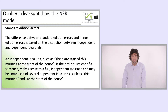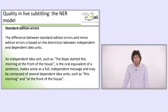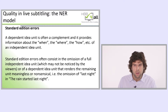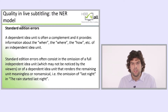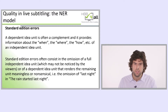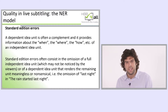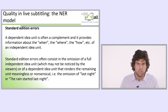An independent idea unit, such as 'the blaze started this morning at the front of the house', is the oral equivalent of a sentence and makes sense as a full independent message. It may be composed of several dependent idea units, such as 'this morning' or 'at the front of the house'. A dependent idea unit is often a complement, providing information about the when, where, how, etc. Standard edition errors often consist in the omission of a full independent idea unit, or of a dependent idea unit that renders the remaining unit meaningless. For example, omitting 'last night' from 'the rain started last night' leaves us with 'the rain started', which gives no information — a standard edition error scoring 0.5.